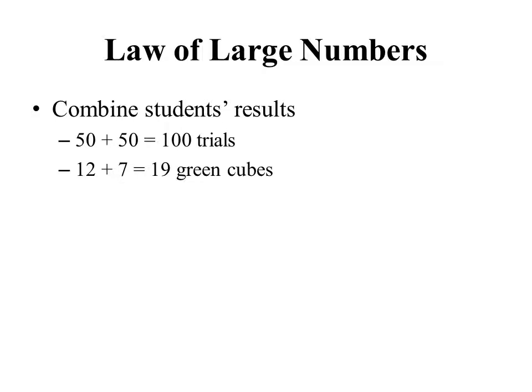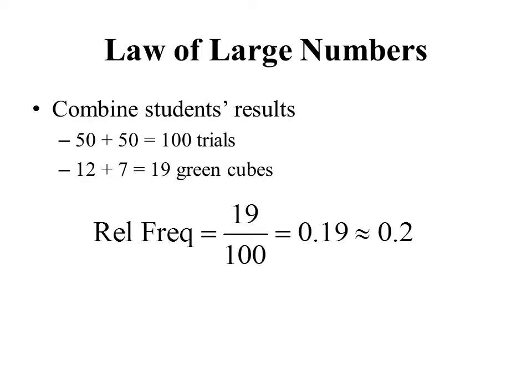Let's use the law of large numbers to combine the students' results. For the two students together, they did a total of 100 trials and got a total of 19 green cubes. Taking 19 divided by 100, we get 0.19. Now 0.19 is pretty close to 0.2 — not exactly 0.2, but closer than either student got individually. That's what the law of large numbers means: you do more trials, your relative frequency is going to be closer to the theoretical probability.